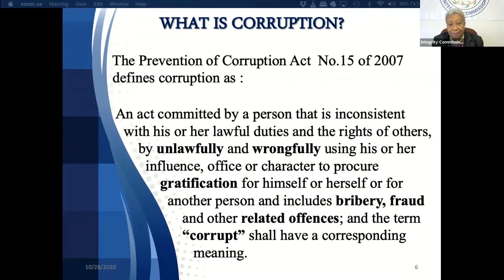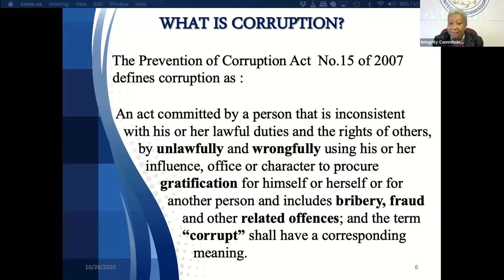What is corruption? The Prevention of Corruption Act, number 15 of 2007, defines corruption as an act committed by a person that is inconsistent with his or her lawful duties and the rights of others, by unlawfully and wrongfully using his or her influence, office, or character to procure gratification for himself, herself, or from another person, and includes bribery, fraud, and other related offenses.